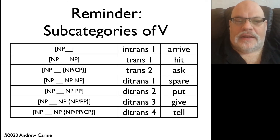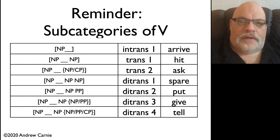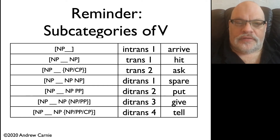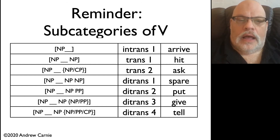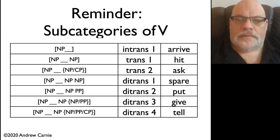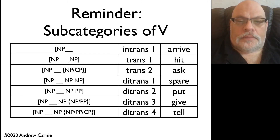We've already sort of hinted at this before. There are really two different kinds of co-occurrence restrictions. The first kind are what are called subcategories. We talked about these way back when we were talking about the subcategories of major parts of speech — these are different categories of verbs.